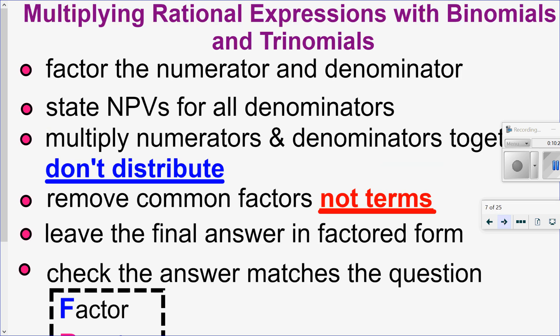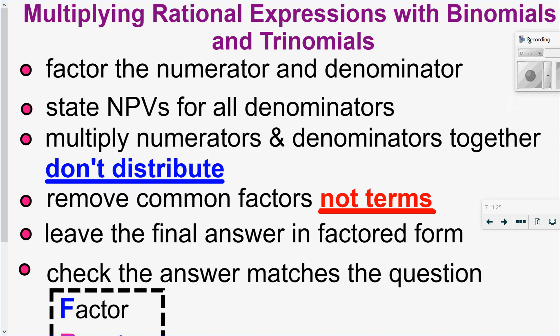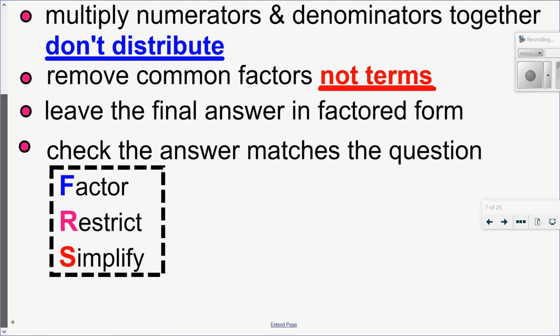Let's look at what happens when I have binomials and trinomials. It's all about the factoring. I want you to factor the numerator and the denominator, state all your non-permissible values for the denominator only, then multiply numerators together and denominators together. Don't distribute — leave it in factored form. Remove all your common factors, not common terms, and leave your answer in factored form. If you can check because there's only one variable, please check it on the calculator. To summarize: factor, restrict, simplify.